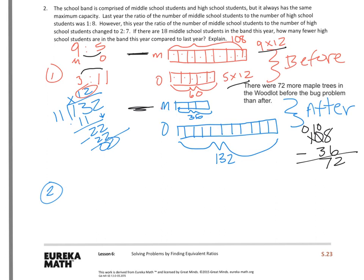So last year, the ratio of the number of middle school students to high school students was 1 to 8. So that's middle to high. However, this year, the ratio of the number of middle school students to the number of high school students changed to 2 to 7. And if I add 1 plus 8, I get 9. This is just my check. 2 plus 7 is 9. So that is true that the ratio doesn't change.